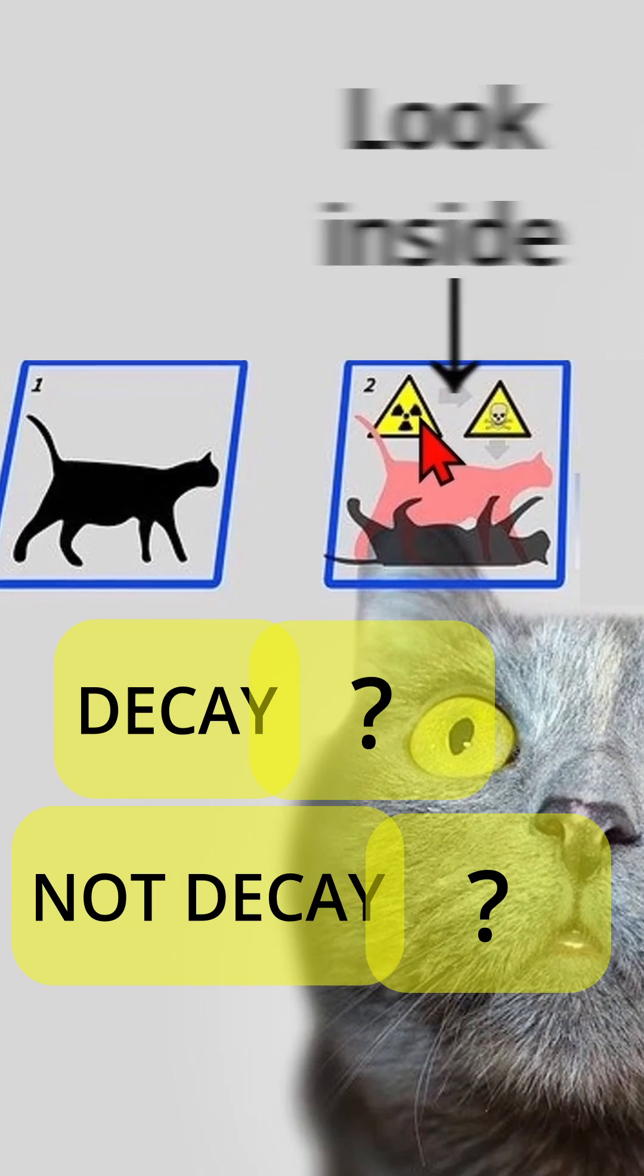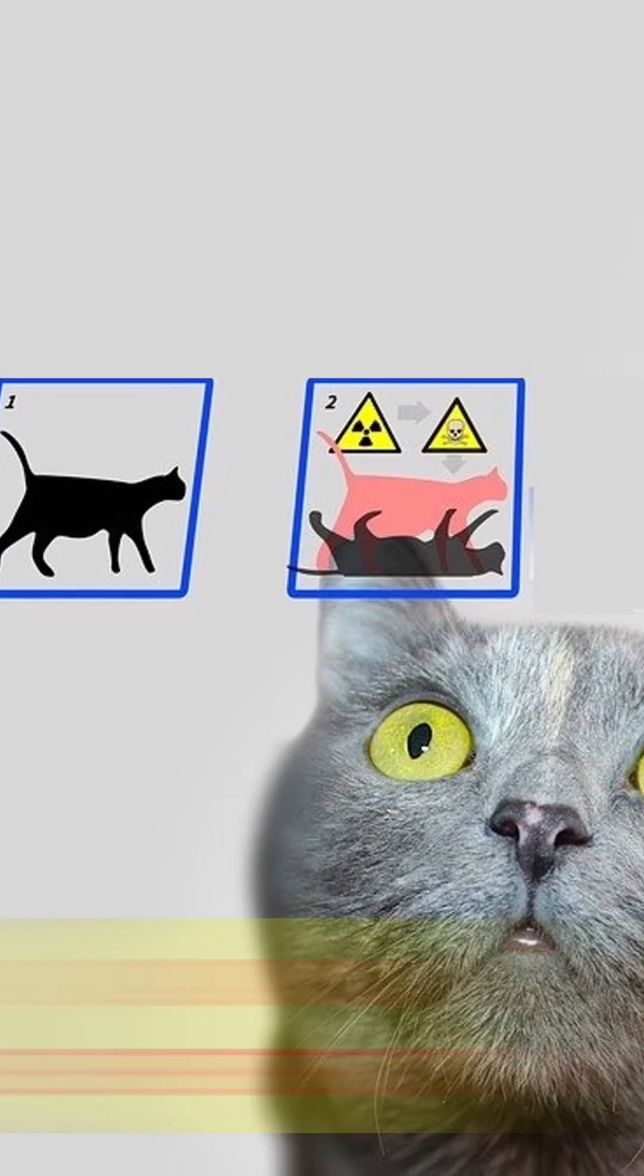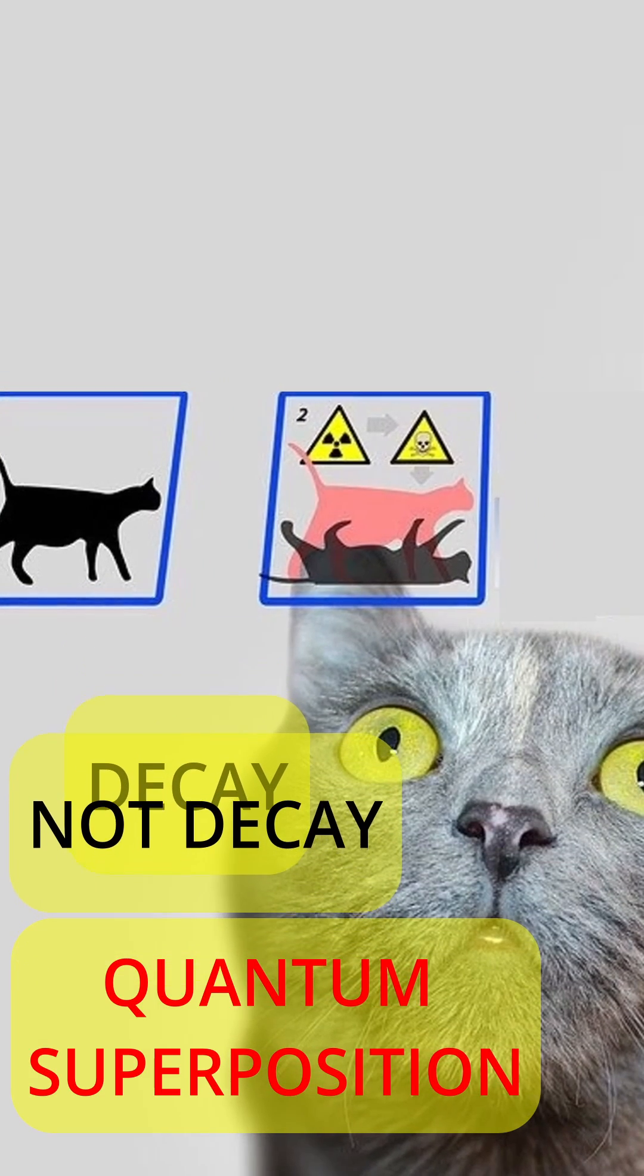Only when we make an observation of it will we find out if the source has or has not decayed. Prior to measurement it is in a quantum superposition of both states.